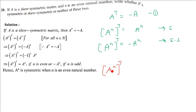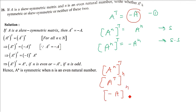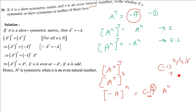Since n is an even natural number, (-1)ⁿ is always positive 1 — for example (-1)² = 1, (-1)⁴ = 1. So (Aⁿ)ᵀ = Aⁿ, which means Aⁿ is a symmetric matrix when A is skew-symmetric and n is even.